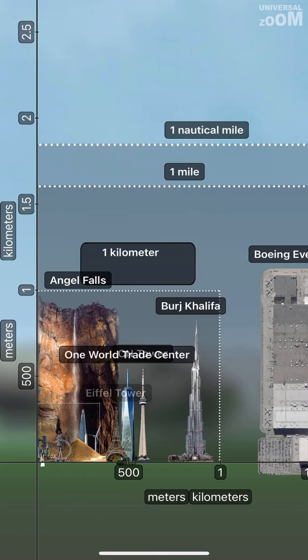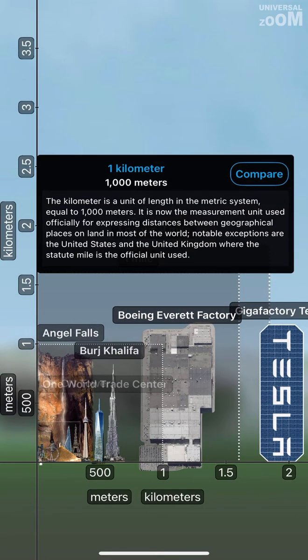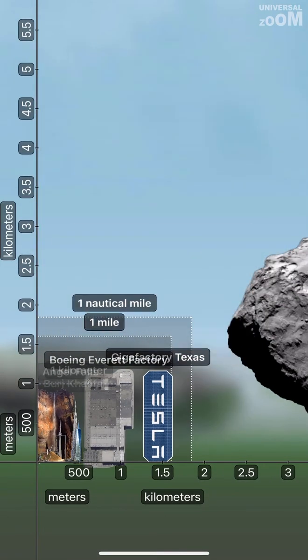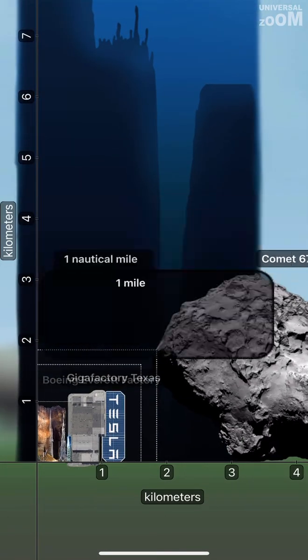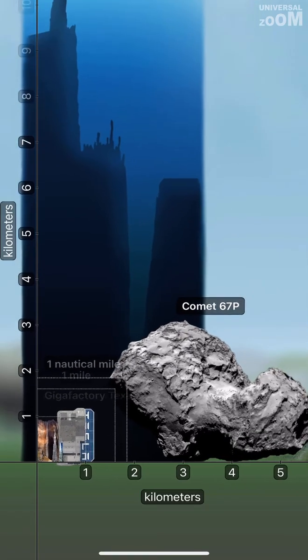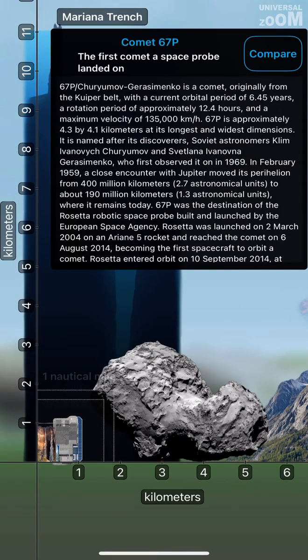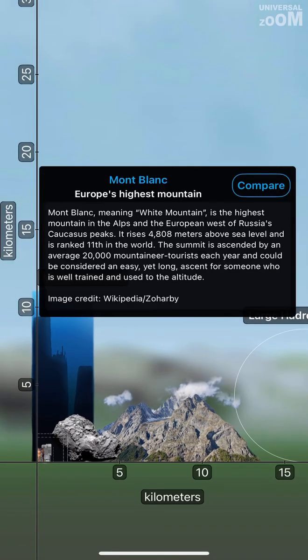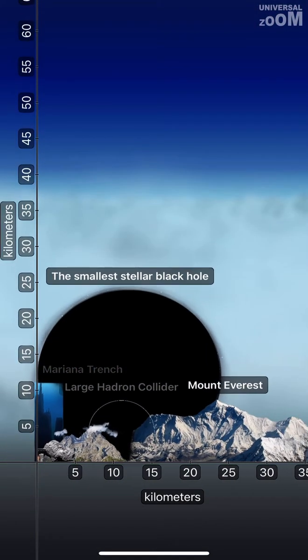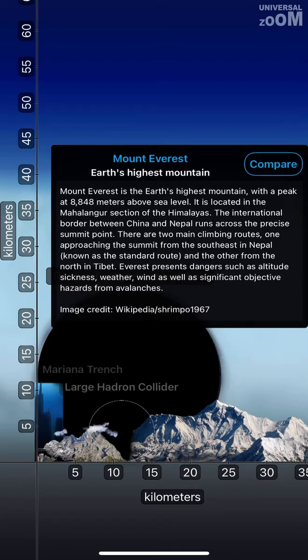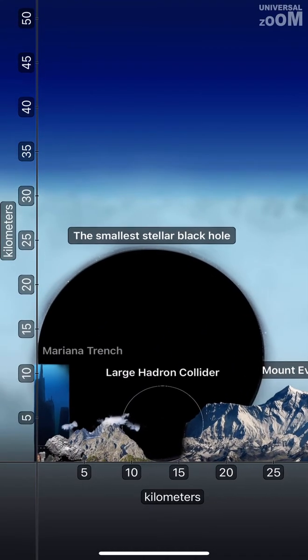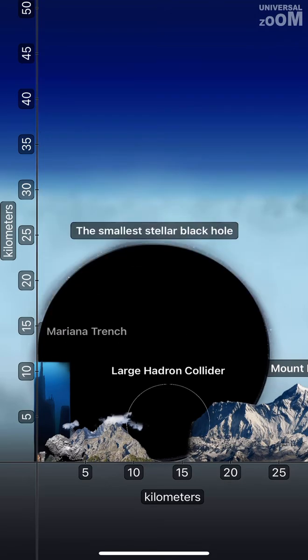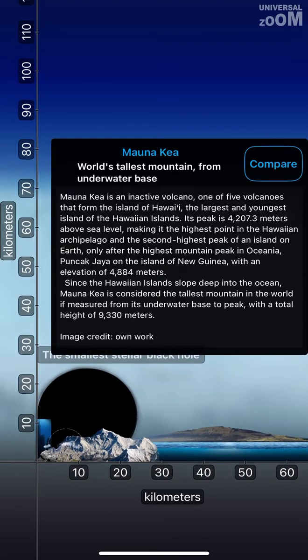1 km, 1,000 meters. Boeing Everett Factory, Gigafactory Texas. 1 mile, 1 nautical mile. Comet 67P. Mont Blanc, Mount Everest. Large Hadron Collider, Mariana Trench, Mauna Kea.